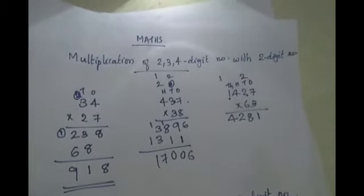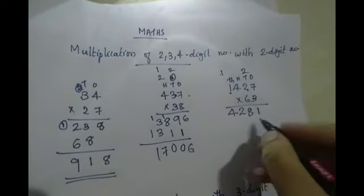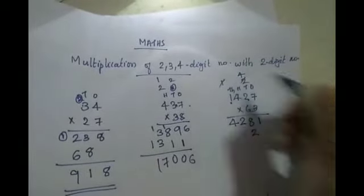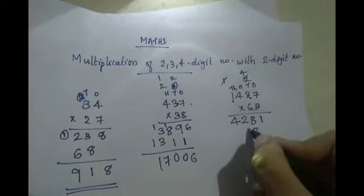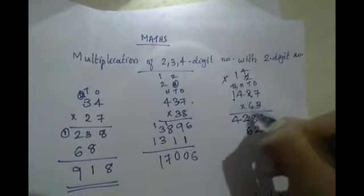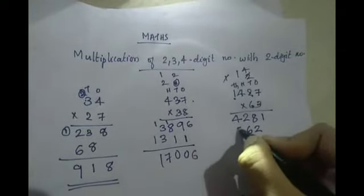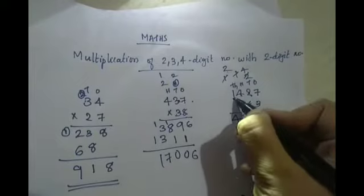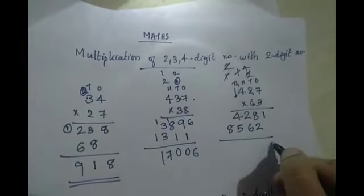You will write in your answer. 6 into 3 is 18, write 8 and 2 is carried over. 6 into 2 is 12, 12 plus 2 is 14, write 4 and carry 1. 6 into 4 is 24, 24 plus 1 is 25, write 5 and carry 2. 6 into 1 is 6, plus 2 is 8.